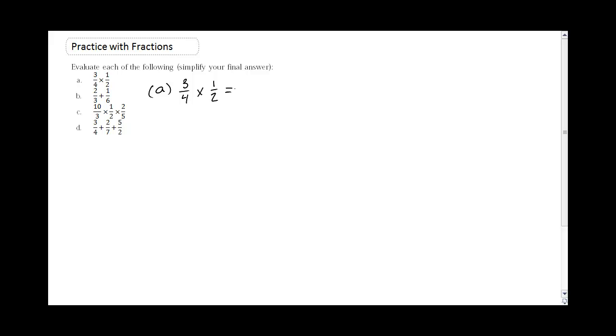you multiply across the top and across the bottom. So 3 times 1 on the top, that's 3. 4 times 2 is 8 because we're multiplying across the bottom. And that gives us what? Well that gives us 3 eighths.